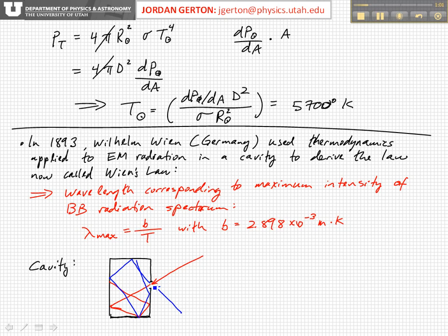So a small hole in a cavity is often used to describe and think about a black body. It's the hole itself that's the black body, and it's in thermal equilibrium with the actual cavity.